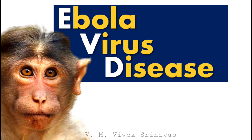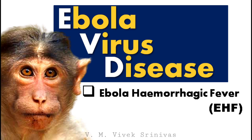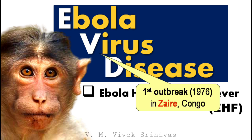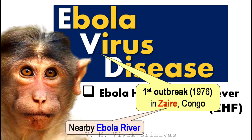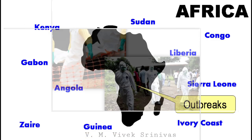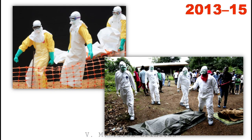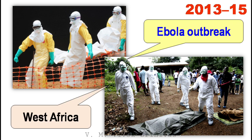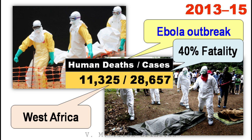Ebola virus disease — the other name for this viral infection is Ebola hemorrhagic fever. The first Ebola virus outbreak was reported in Zaire, at Congo, in 1976, and the causative agent was named after the nearby Ebola River. Till date, many Ebola outbreaks have been recorded. In 2013–2015, a massive Ebola outbreak occurred in West Africa, in which a 40% human fatality rate was documented.